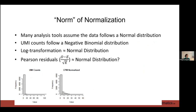Normalization is called normalization because we want our data to follow a normal distribution, since many statistical tools assume normality - linear regression, ANOVA, PCA all assume normally distributed data. However, UMI counts for single-cell RNA-seq follow a negative binomial distribution, not a normal distribution. So we need to transform our counts so that the transformed UMI counts follow a normal distribution closely enough that our tools will work.